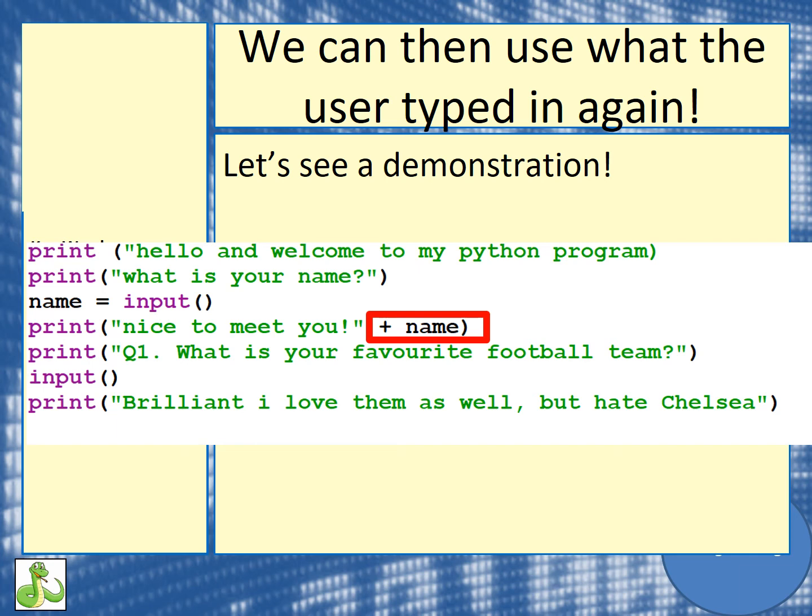How do you think we could do this after the question: what is your favourite football team? Pause the video and try and answer that now. The answer is: before our input, we would have something like team equals input. We can't have more than one word, remember. And then in our print line, we could put brilliant, I love — and we could put a plus there and put team. So to the user, it would look like saying brilliant, I love Man United, for example.